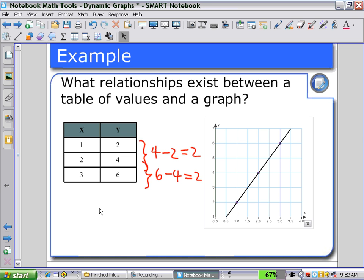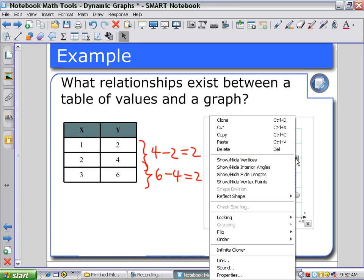Then exploring the relationships on our graph, we could use some of our other tools, for example, our irregular polygons. Create a triangle. And as we select this triangle, using the pull-down menu, we can show our vertices.